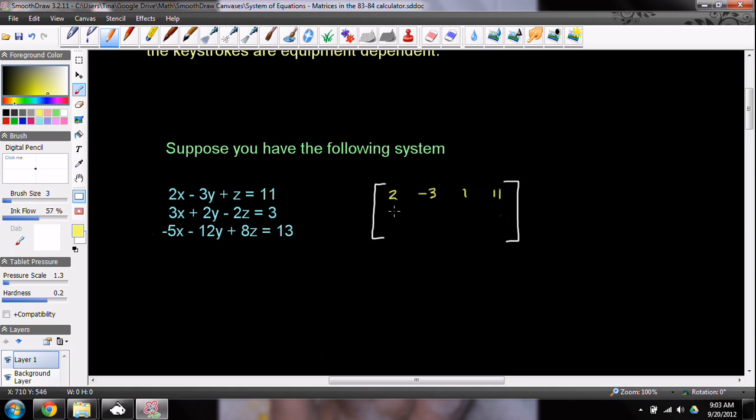Along the next row, we have 3, 2, -2, and 3. And on that final row, we have -5, -12, 8, and 13. Now remember, each row corresponds to one of the equations. The first three columns correspond to each variable. You'll notice that I only have x's, then y's, then z's. They're not intermixed. If they're intermixed, you've got to un-intermix them and put them in an x column, a y column, and a z column.